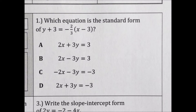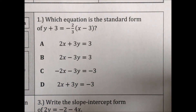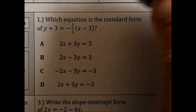Which equation is the standard form of y plus 3 equals negative two-thirds parentheses x minus 3? For standard form, we need the x and the y on the same side and the constants on the other side.